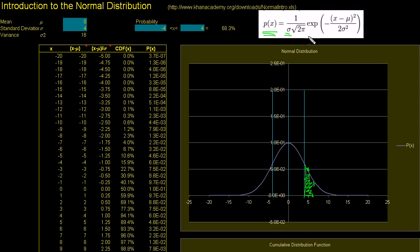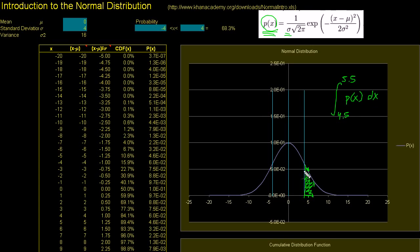Your probability isn't given by just reading this graph — the probability is given by the area under that curve. For those of you who know calculus, if p of x is our probability density function, the way you actually figure out the probability of, say, between 4.5 and 5.5 inches of rain tomorrow, it'll actually be the integral from 4.5 to 5.5 of this probability density function dx. For the normal distribution, this isn't an easy thing to evaluate analytically, so you do it numerically.